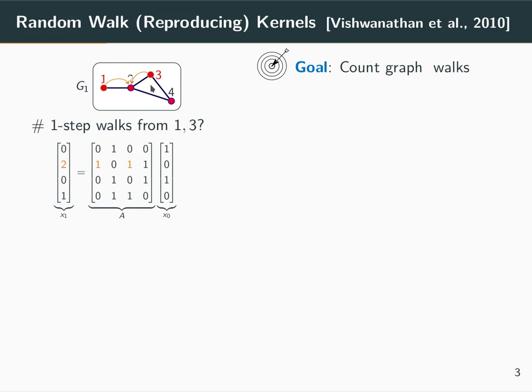From initial positions 1 and 3, the same happens for vertex 4. Having this, we can also extend to a k-step walk, which simply amounts to taking the kth power of the adjacency matrix.